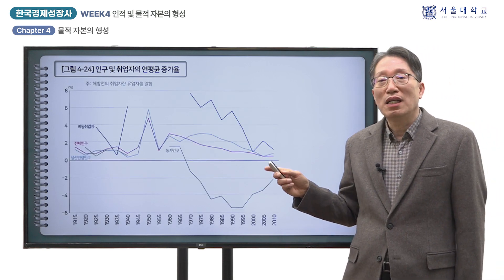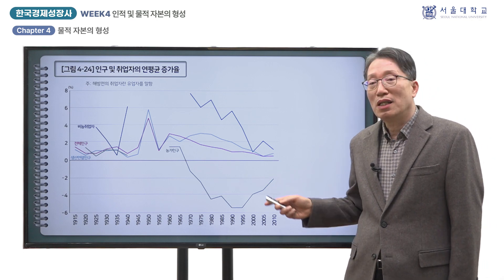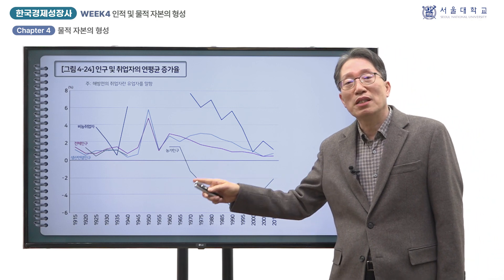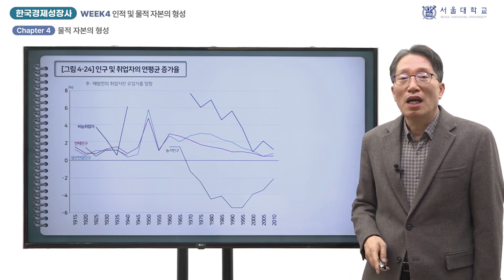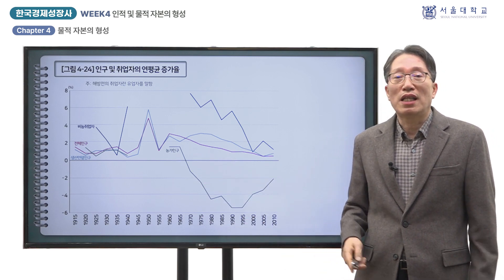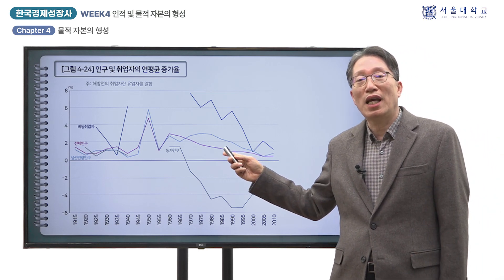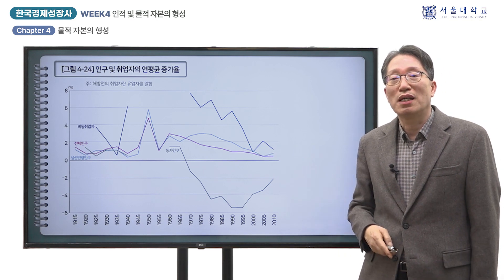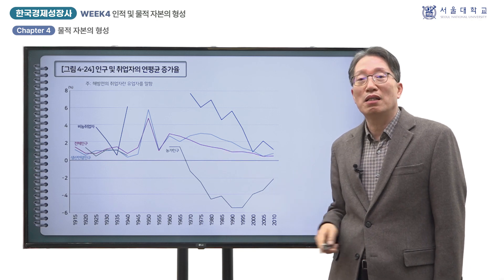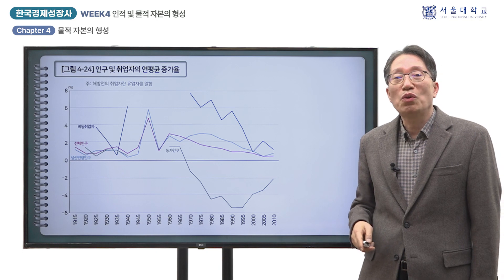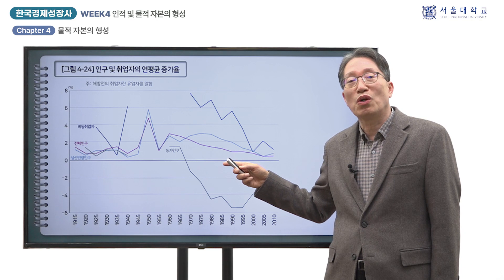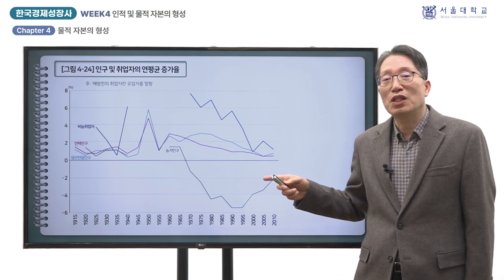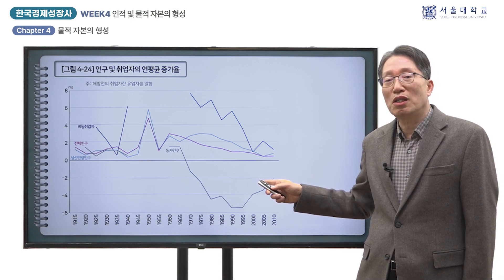그림 4-24는 인구와 취업자의 연평균 증가율의 추이를 나타낸 것입니다. 생산연령 인구의 연평균 증가율은 해방 전 1.2%였지만 고도성장기에는 2~3%로 높아졌습니다. 1970~80년대에 생산연령 인구와 전체 인구의 증가율 갭이 크게 벌어져 이 시기 부양비율의 빠른 하락을 보여줍니다. 비농업 취업자 증가율이 고도성장기에는 연평균 6% 전후로 매우 높았으며, 늘어난 생산연령 인구를 흡수하는 데 그치지 않고 농가 인구의 급속한 유출을 일으켰습니다. 다만 1990년대 후반 이후는 고용 증가율이 급속히 둔화되고 있습니다.